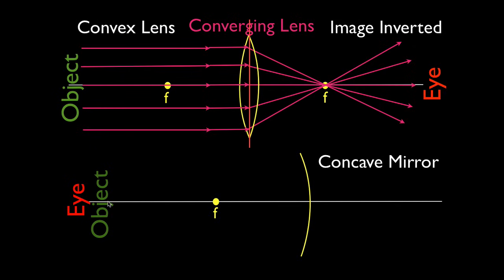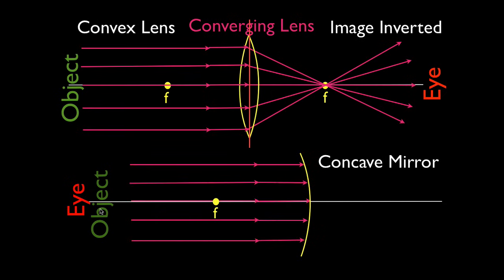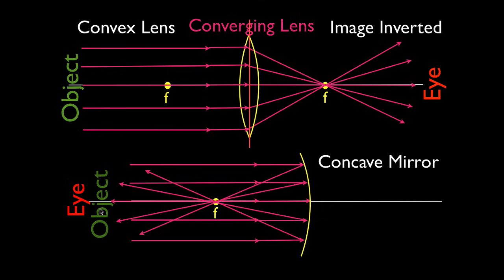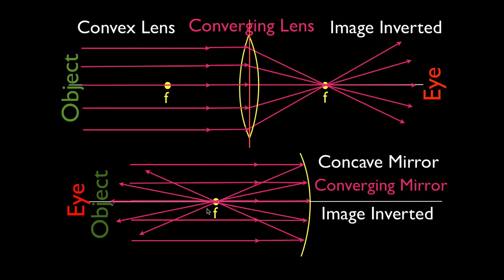Let's do the same thing for the concave mirror — this is the shiny, concave side of the mirror. The light rays come in parallel, they strike that mirror, and they're reflected in such a way that they all once again pass through the focal point. They converge at the focal point. Therefore, we call this the converging mirror, and the image appears inverted. As long as the object is beyond the focal point, the image will appear upside down.